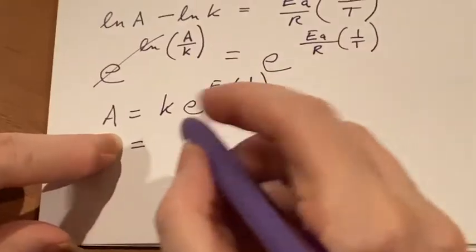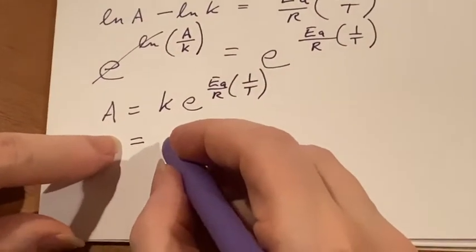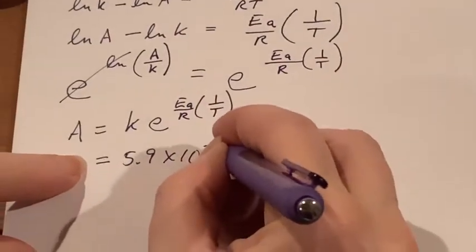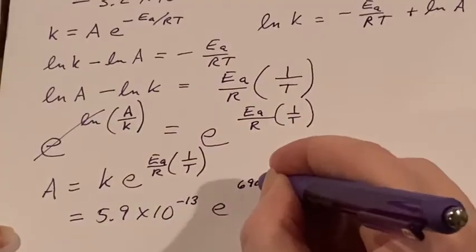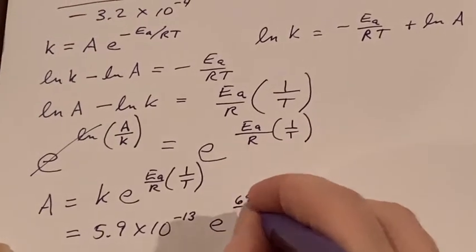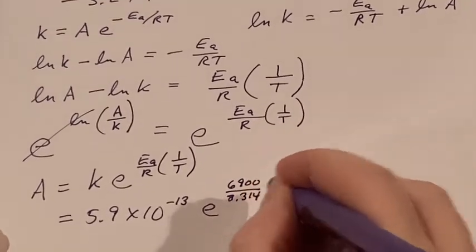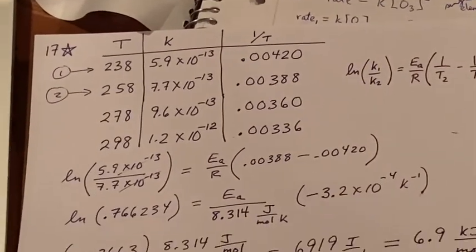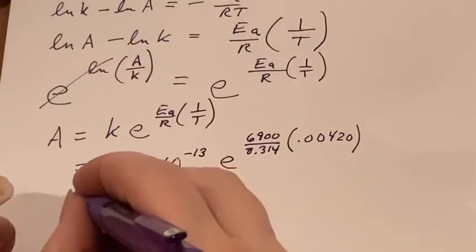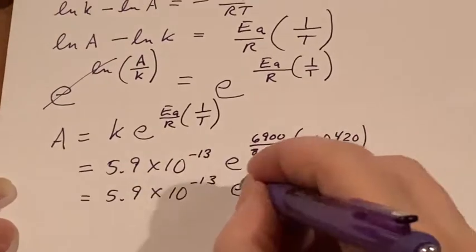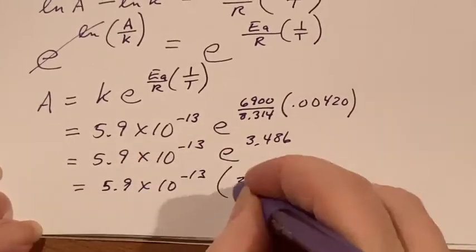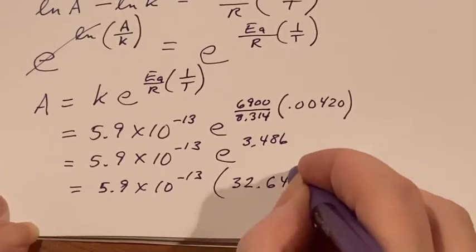I can just go ahead and put these in now. The k I am going to pick up from up here because I said I was going to use the first one: 5.9 times 10 to the negative 13, e raised to 6900, and then the 8.314, and then the one over T which was from the first one, so 0.00420. You're going to end up with - put an intermediate step here - this is e to the 3.486, you get 32.64.